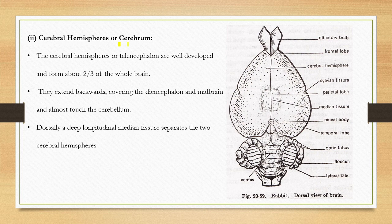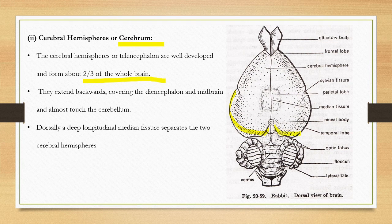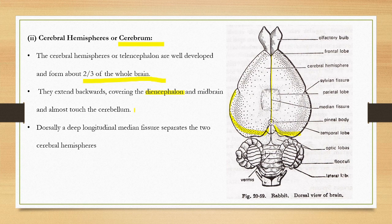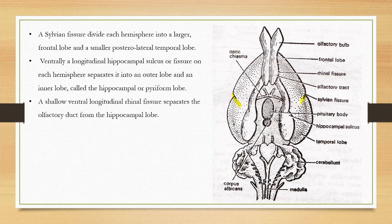The cerebral hemisphere is the largest part, covering almost two-thirds of the whole brain. It extends backwards, covering the diencephalon. On the cerebral hemisphere there is a longitudinal median fissure that divides the cerebrum into right and left halves. There is also a Sylvian fissure which divides the cerebrum into a larger frontal lobe and a smaller temporal lobe.